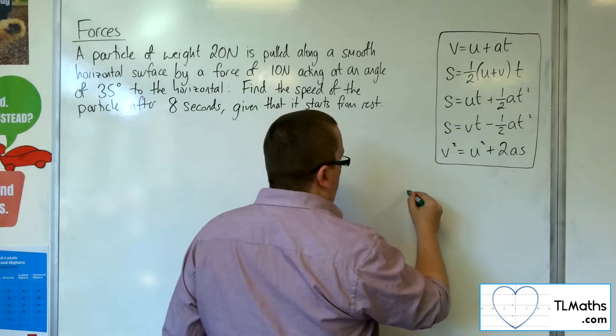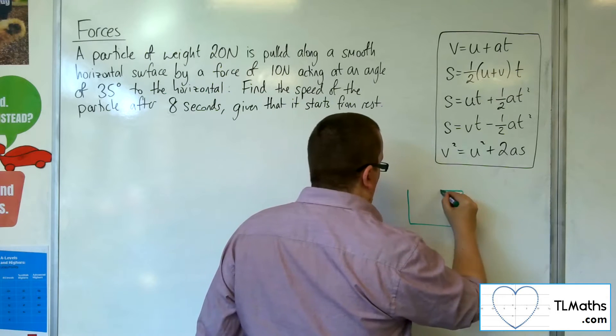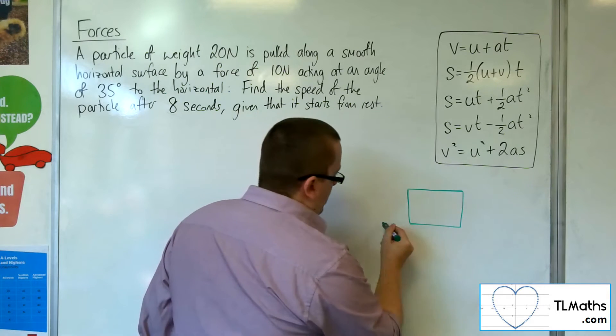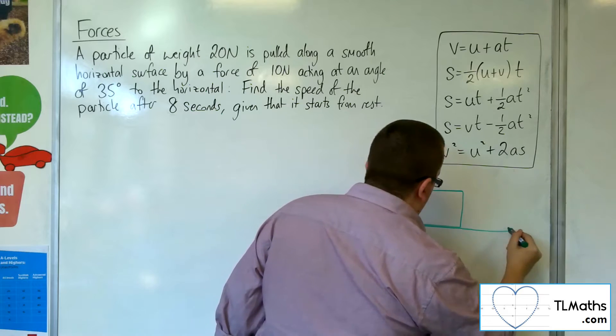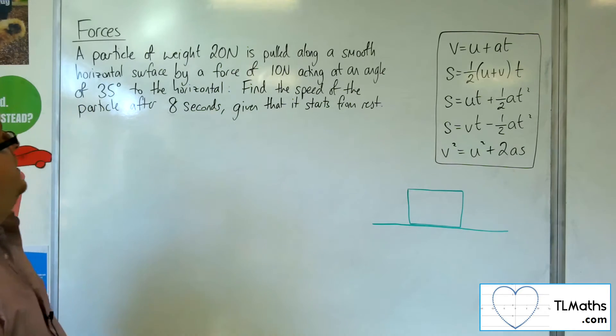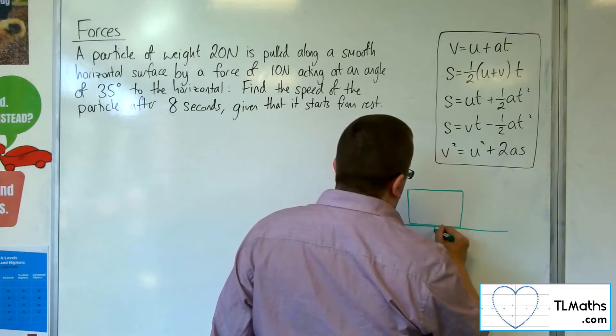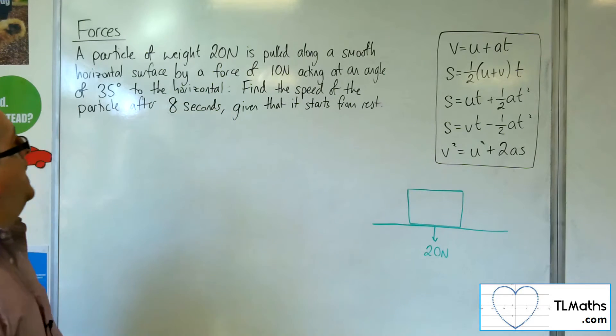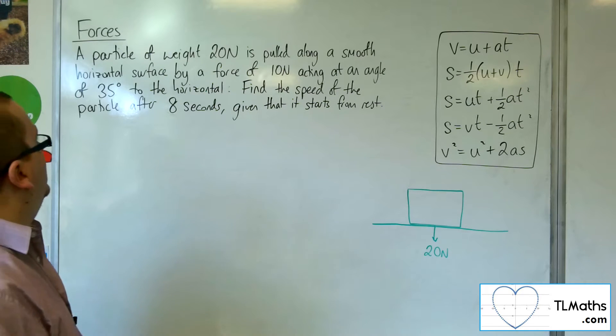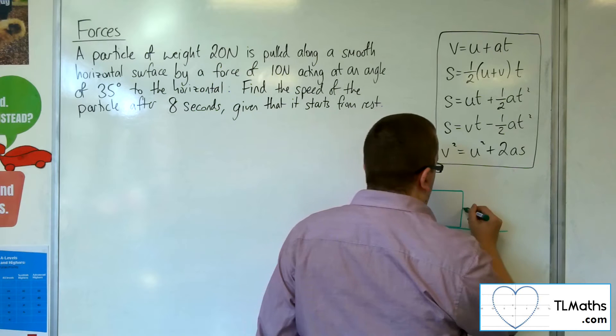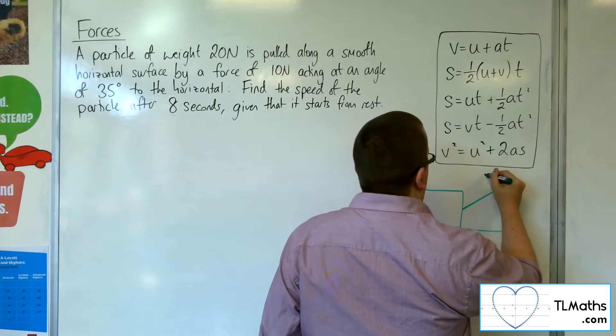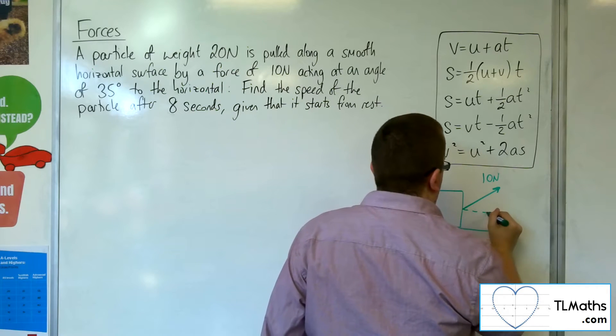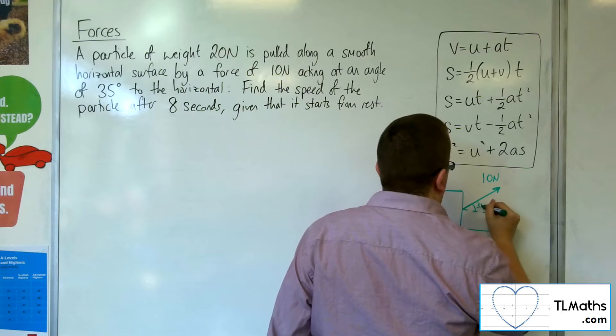So we've got this particle, let's draw it as a box, and it's on a smooth table, and it has a weight of 20 newtons. That's working vertically downwards. It's being pulled along by a force of 10 newtons, acting at an angle of 35 degrees to the horizontal. So, 10 newtons, and that angle is 35 degrees.